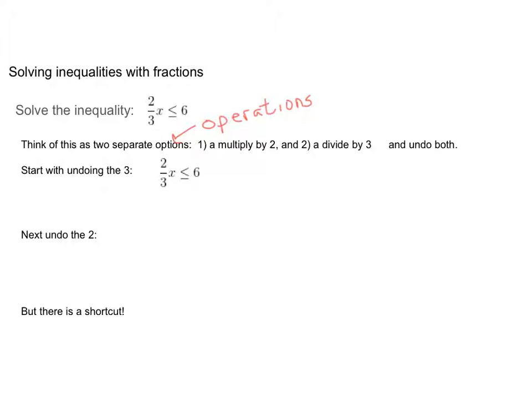So the first way I want to talk about it is think of this as two separate operations. So you should think of this as a multiply by 2 and a divide by 3, and we're going to undo both. And we just did this in the do now. So it's connected to that. So in the do now, we had 2x is less than or equal to 6, and we had x over 3 is less than or equal to 6. So we're going to undo it the same way. So we're going to start by undoing the 3. The 3 is a division. So that means we're going to multiply.